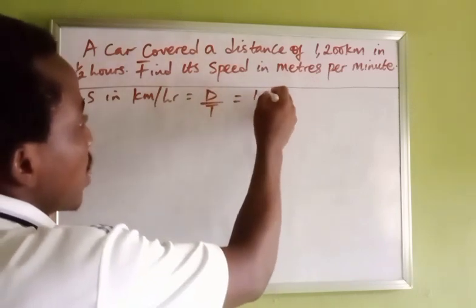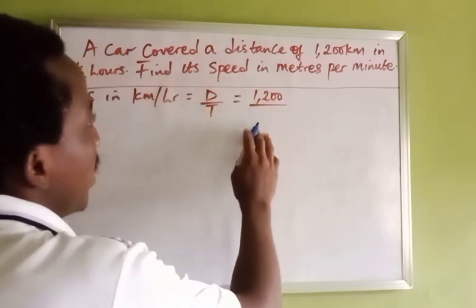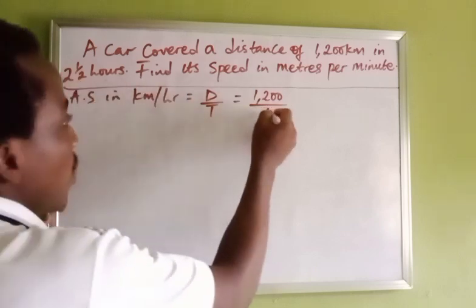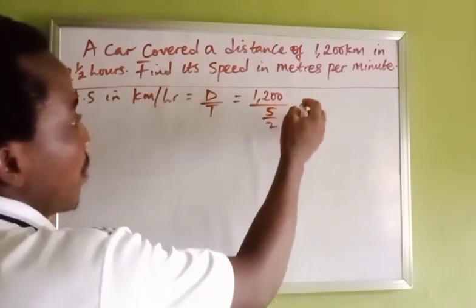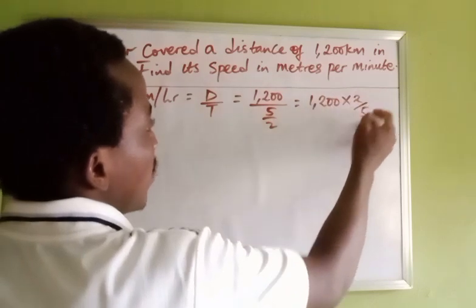The distance from here is 1,200, divided by the time. If you convert it to improper fraction, that will be 5 over 2. Using the reciprocal, we have 1,200 times 2 over 5.